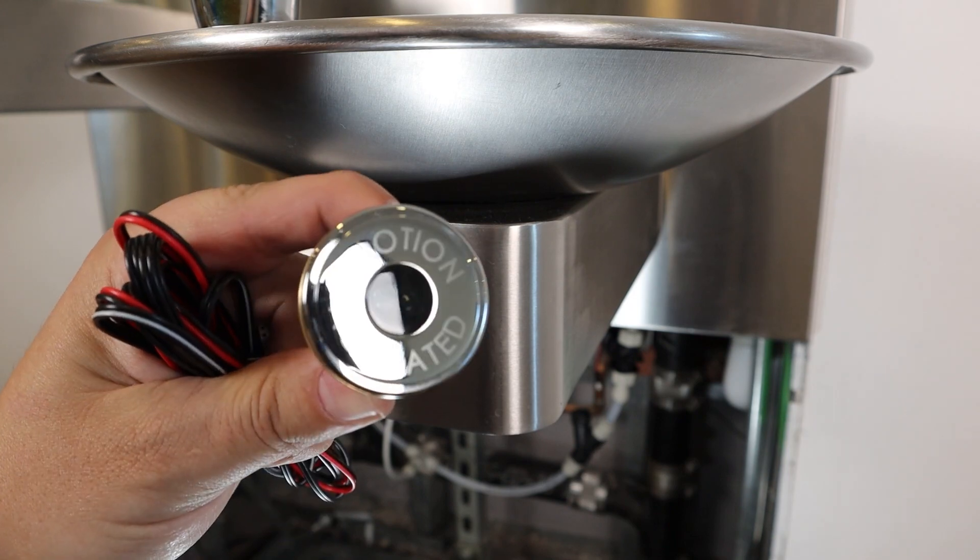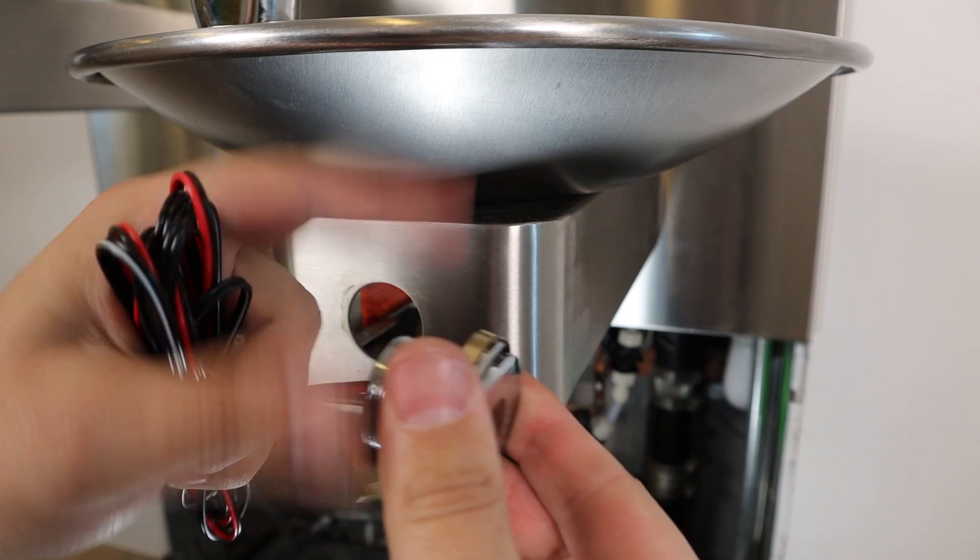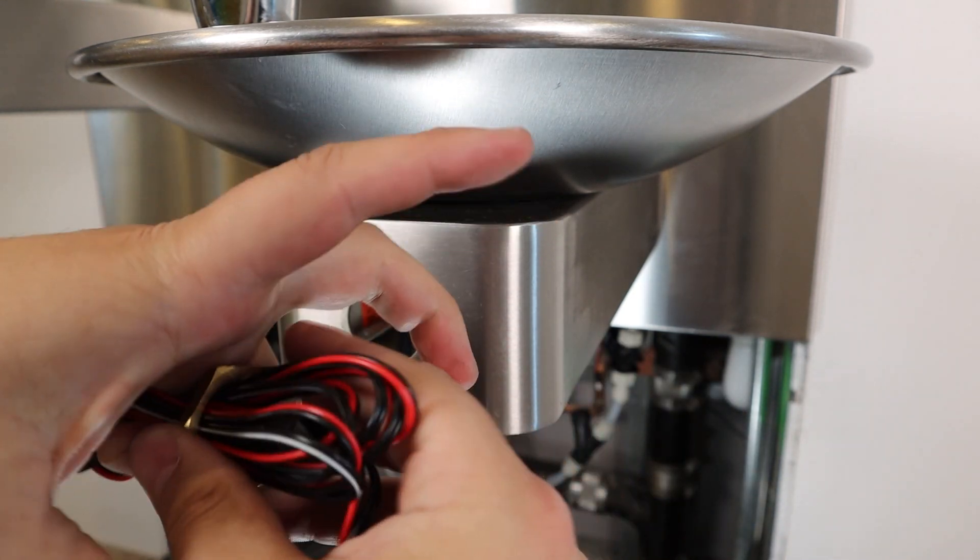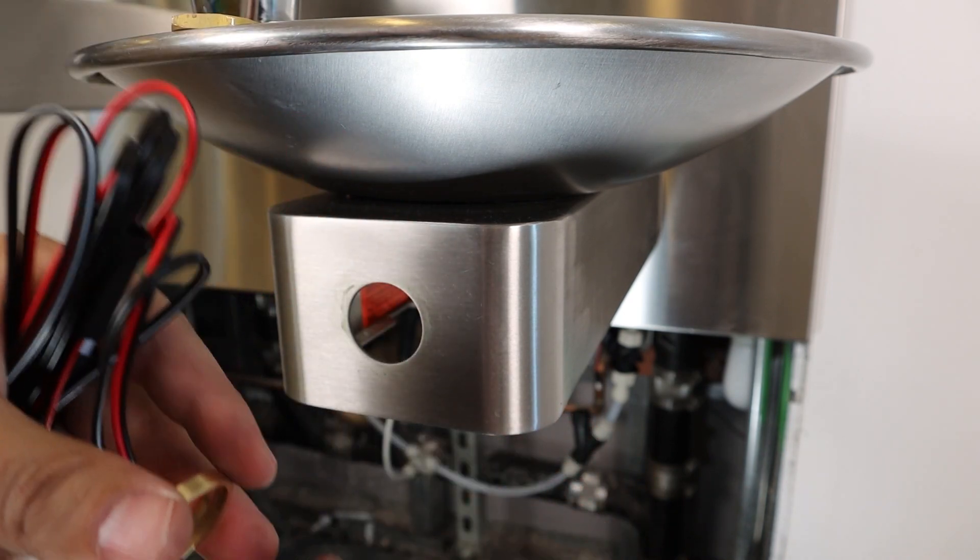Unscrew the mounting hardware attached to the back of the sensor and carefully remove both the nut and washer by sliding them over the wiring. Then, slide the wiring through the hole on the front of the fountain where we previously removed the mechanical push button.